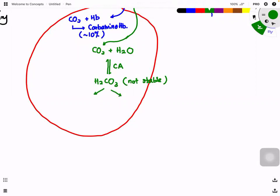Carbonic acid (H₂CO₃) is unstable and immediately dissociates into H⁺ and HCO₃⁻ (bicarbonate ion). The bicarbonate ions are then released into the blood plasma. Because the cell is continuously losing negative ions (HCO₃⁻), chloride ions move into the cell to balance the charge — this is called the chloride shift.